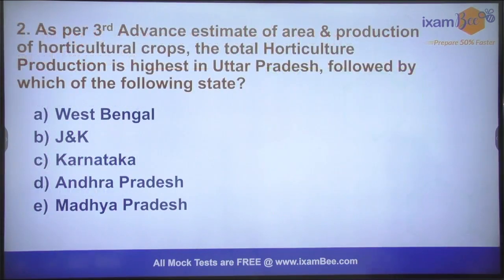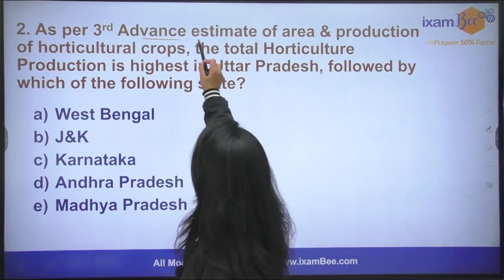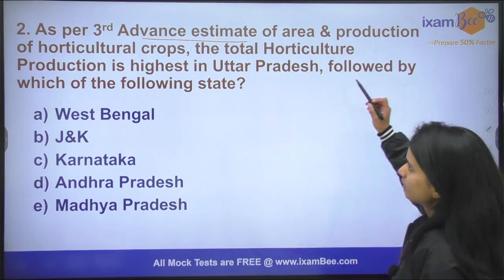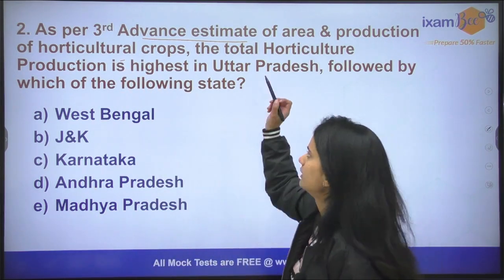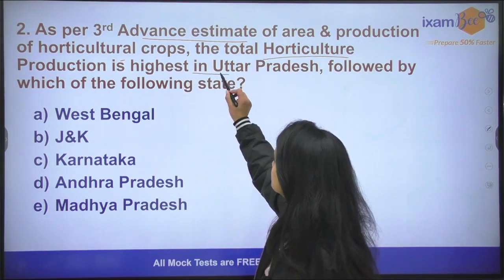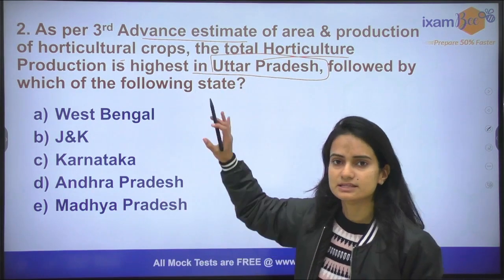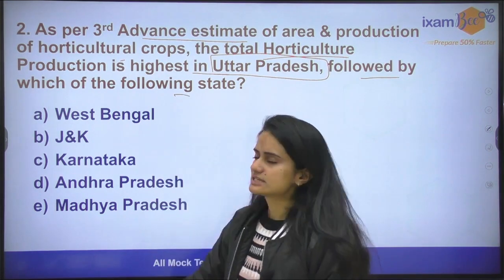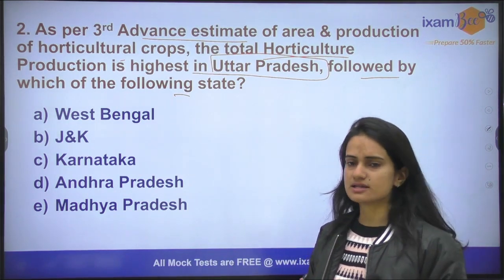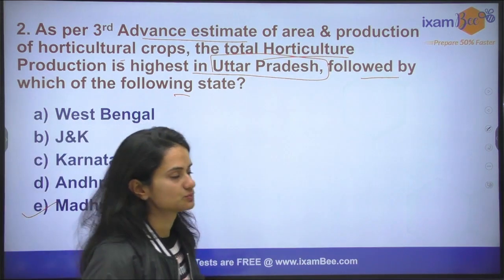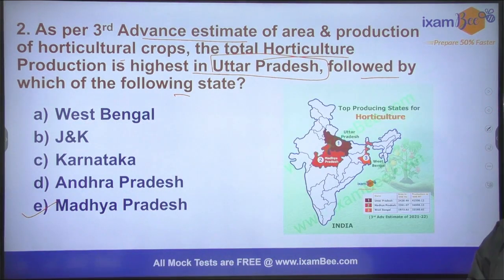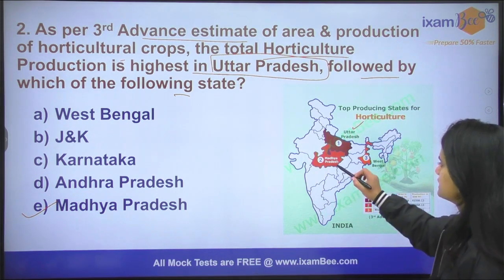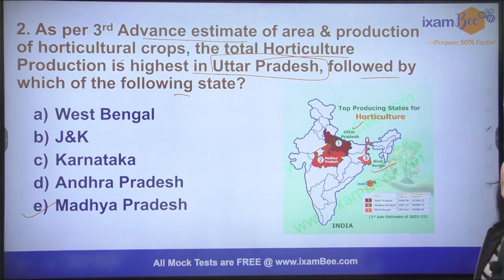Moving on to question number two: As per the third advance estimate, which is released in October, regarding horticultural crops — total horticultural production is highest in Uttar Pradesh. You have to tell which state is second. The answer is Madhya Pradesh. Madhya Pradesh is the second leading state, followed by West Bengal in third place.